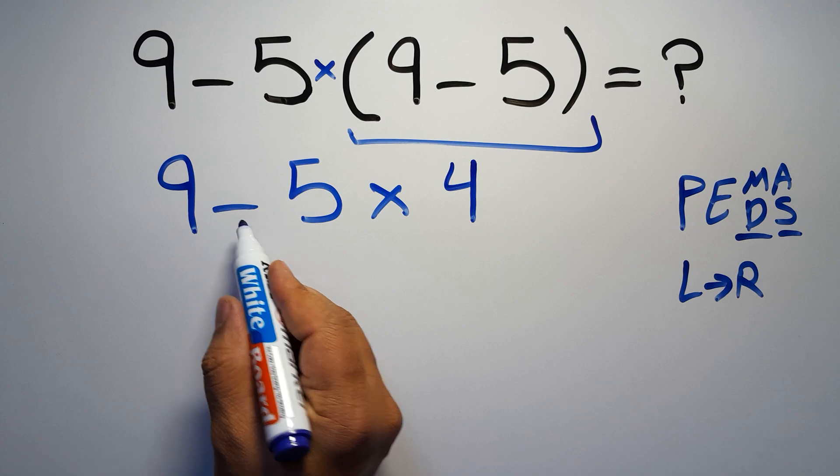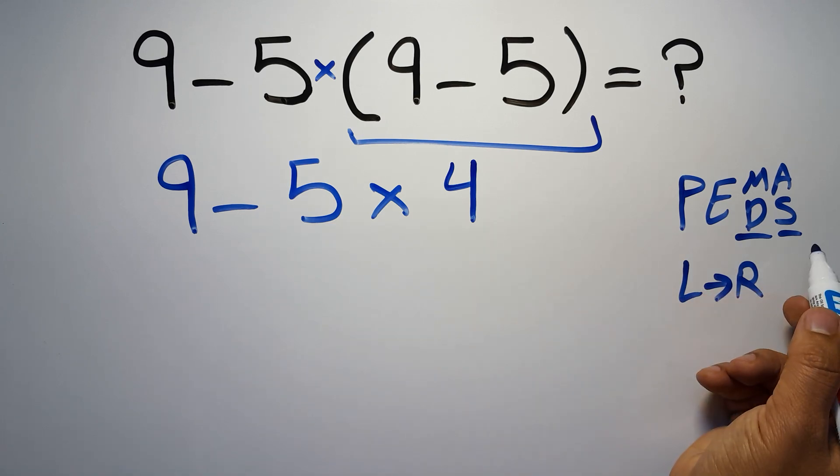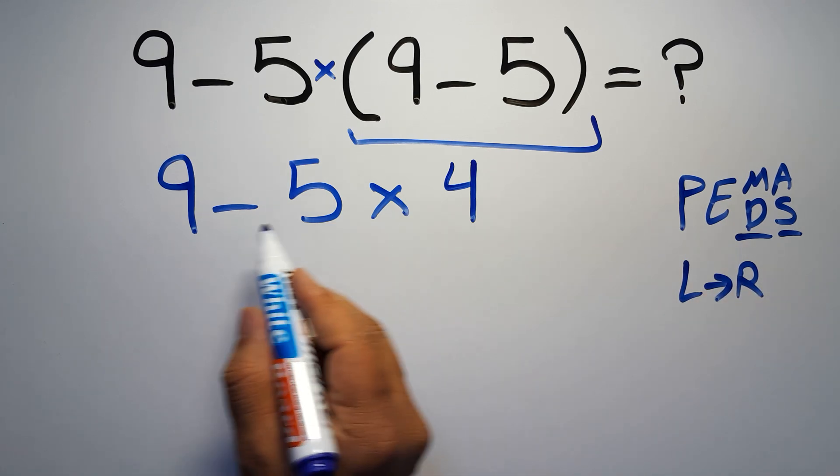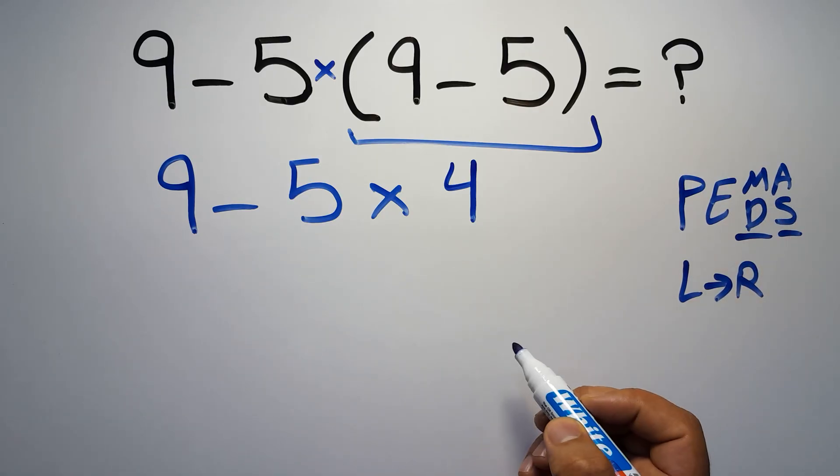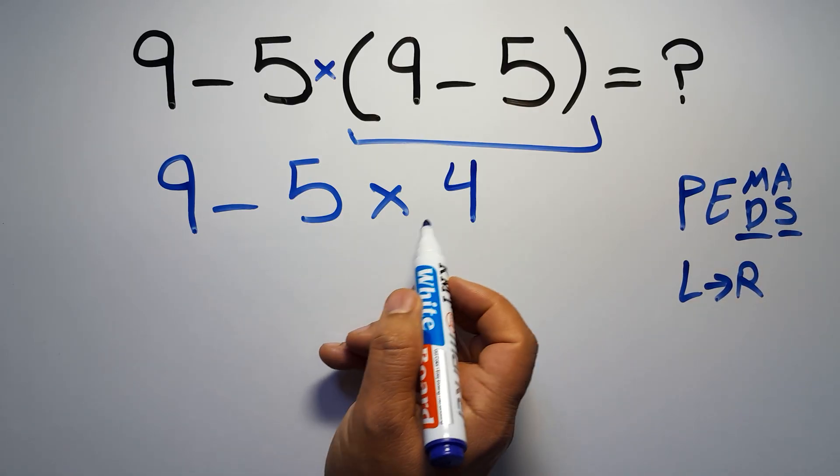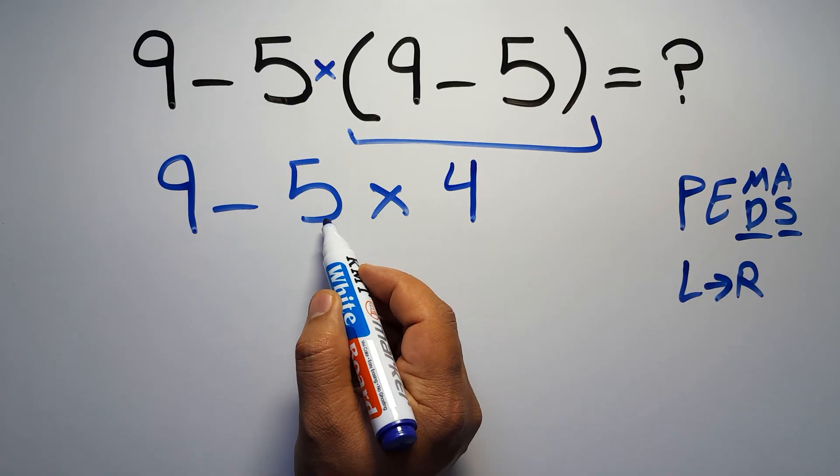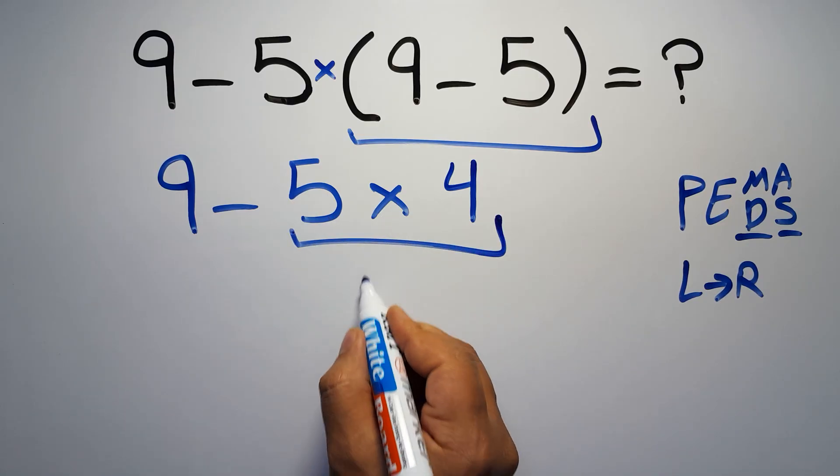Now we have 1 subtraction and 1 multiplication. According to PEMDAS, multiplication has higher priority than subtraction. Because multiplication comes before subtraction. So here first we have to do this multiplication. 5 times 4 equals 20.